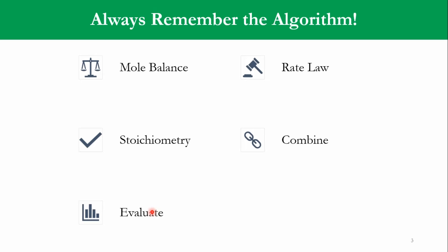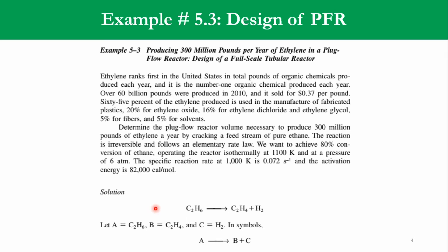Once you remember this algorithm, you will be able to solve the numerical in an easy way. Example number 5.3 is related to the design of PFR and it is related to producing 300 million pounds per year of ethylene in a plug flow reactor. Design of a full scale tube reactor. That is the main statement of this example.